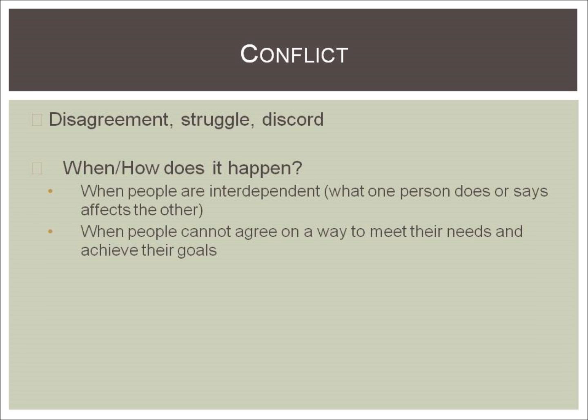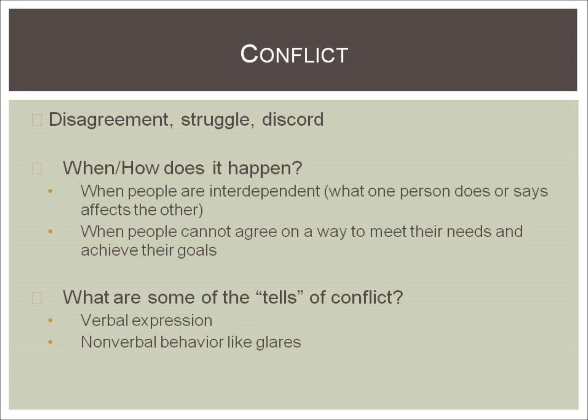Conflict occurs when people are interdependent, meaning what one person does or says affects the other. It also occurs when people cannot agree on a way to meet their needs and achieve their goals. Some of the tells, or indicators of conflict, are verbal expressions — that is, words — and nonverbal expressions, which include things like glares, the silent treatment, eye rolling, etc.